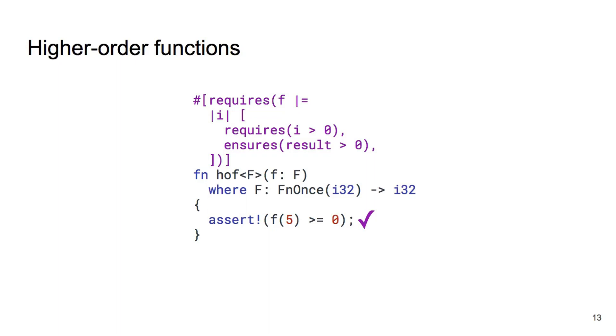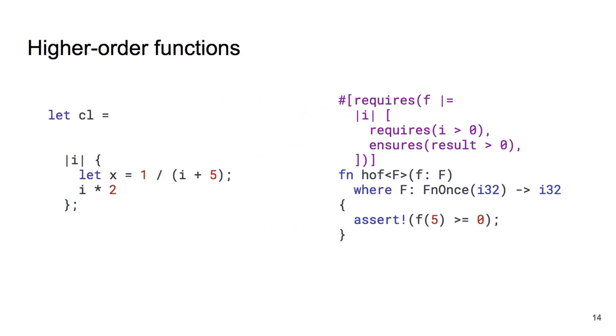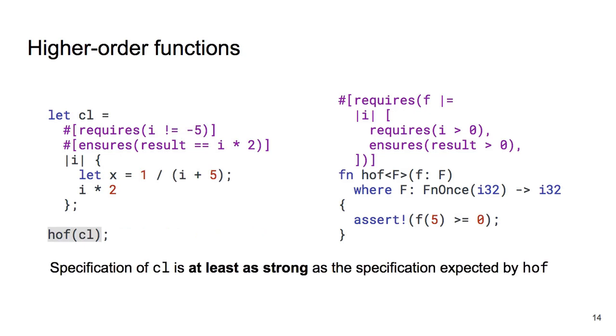Of course, higher-order functions are only useful if we can call them. Let's consider a concrete closure CL, which we might want to pass to HOF. We will add a postcondition to the closure, stating that it returns double the argument we called it with. However, we also have an integer division operation in the closure. Rust would panic at runtime if a division by 0 was attempted, so to prove absence of panics, we add a precondition that i is not negative 5. So, how do we verify whether we can pass CL to HOF?